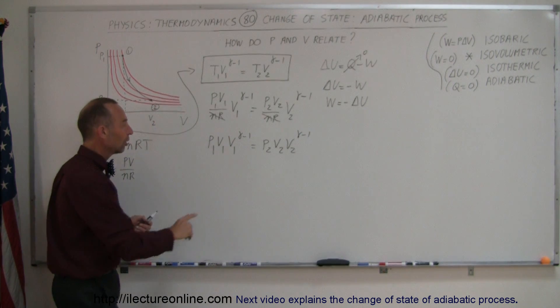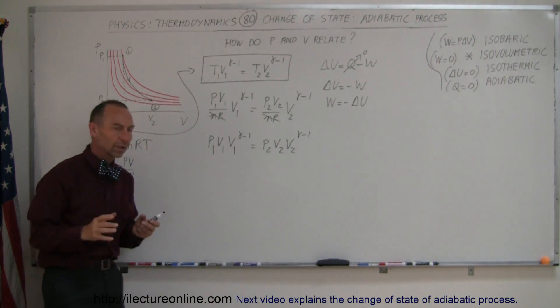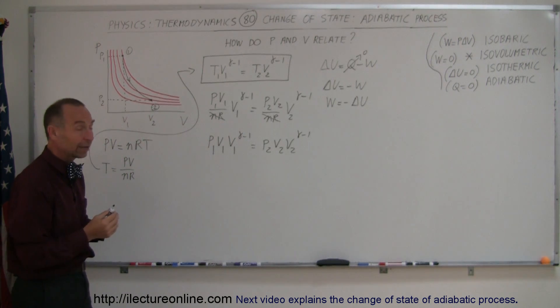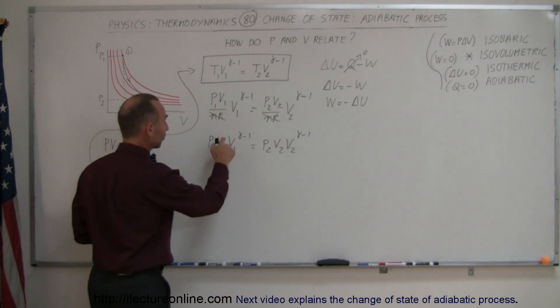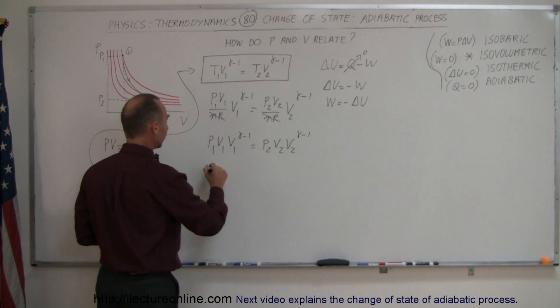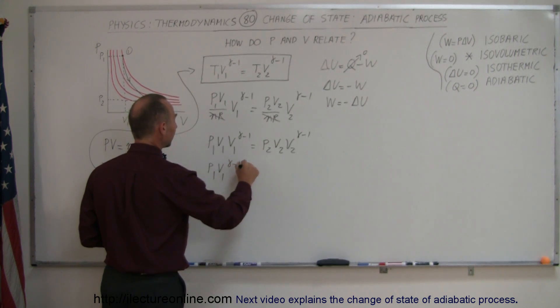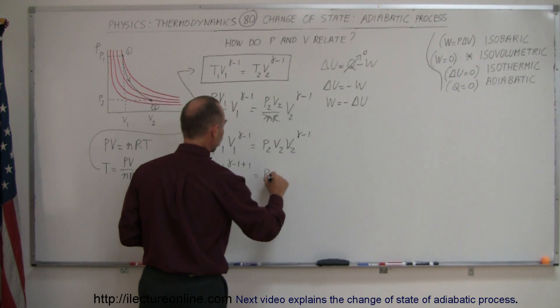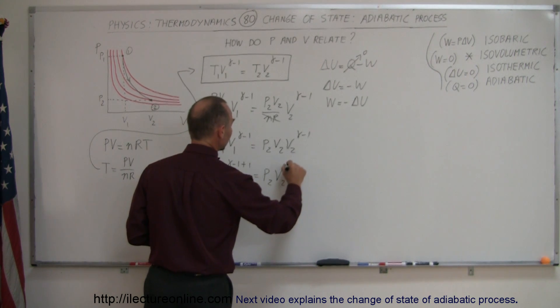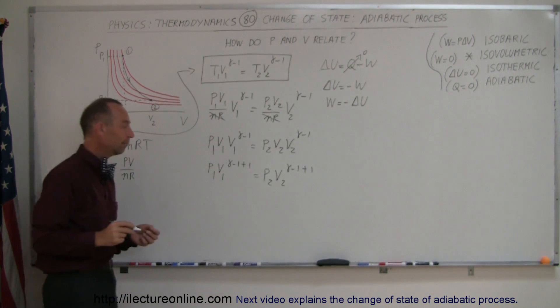Here we have V1 times V1 to the gamma minus 1, so we're multiplying two things together and the bases are the same, which means we can add the exponents. This becomes P1 V1 to the gamma minus 1 plus 1 equals P2 V2 to the gamma minus 1 plus 1.